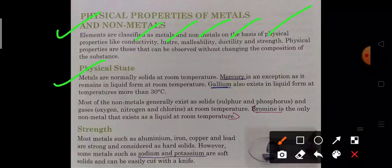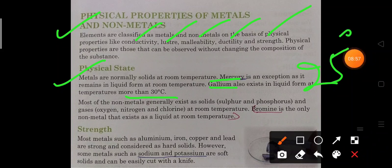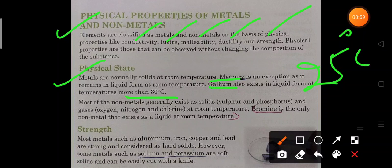Metals are normally solid at room temperature. But mercury is the exception which is liquid at room temperature (25 degrees celsius). And gallium also exists in liquid form but at temperature more than 30 degrees celsius.